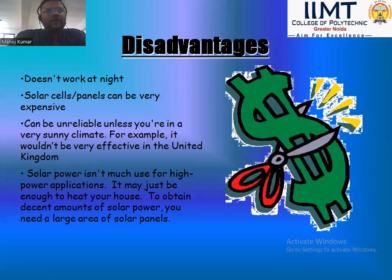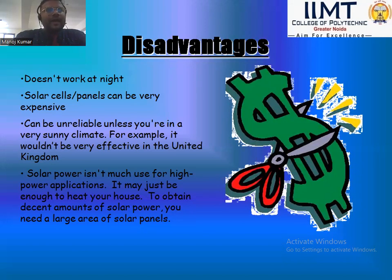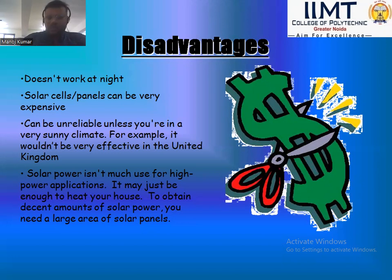Disadvantages of solar energy: It doesn't work at night. Solar panels can be very expensive. It can be unreliable unless you are in very sunny climates — for example, it wouldn't be very effective in the United Kingdom. Solar power is not suitable for high power applications; it may just be enough to keep your house running with decent amounts of solar power.